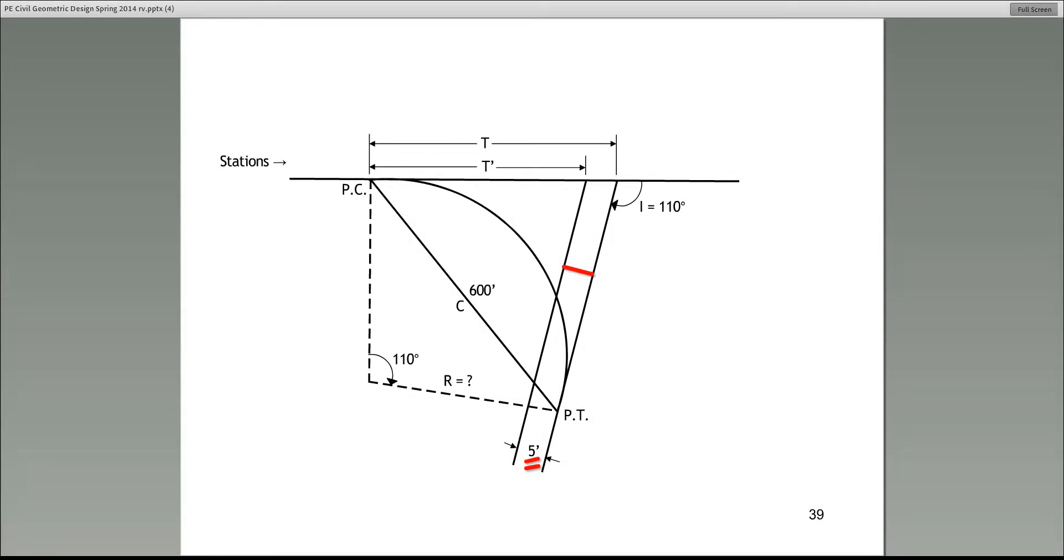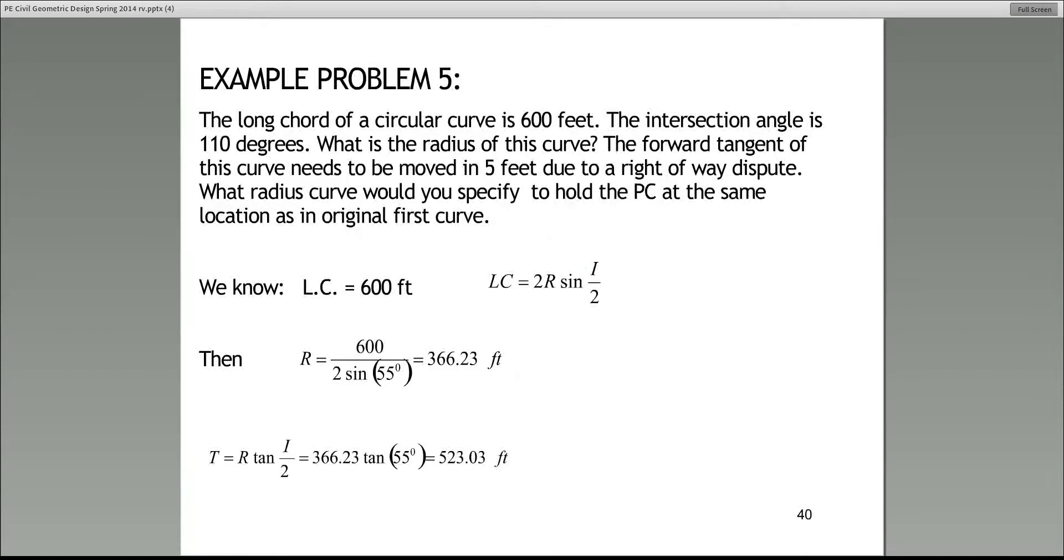When they say the tangent, the forward tangent was moved in five feet, that means it was moved in that direction five feet. So the five feet is this red distance here. A common mistake is that a lot of people just assume the five feet is this blue line. It's not the blue line. The five feet they give you in these problems is that red line. So if you recognize that, that will help you.